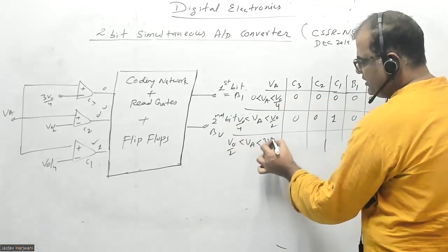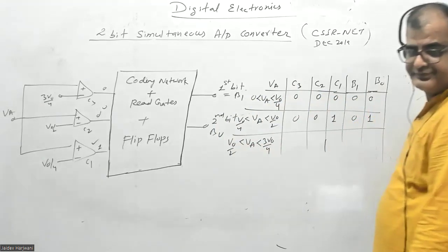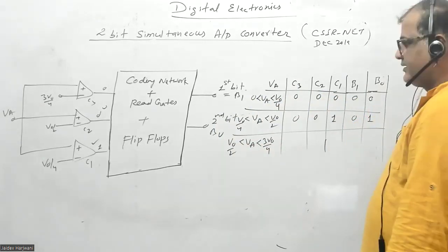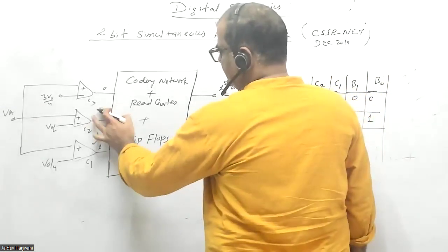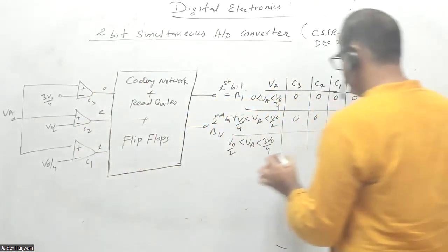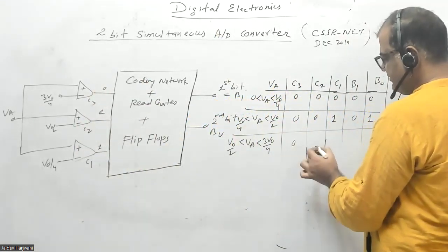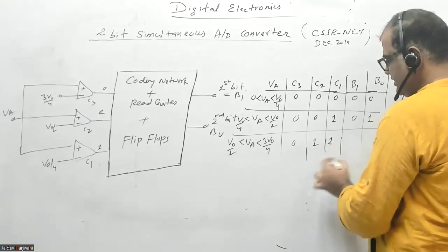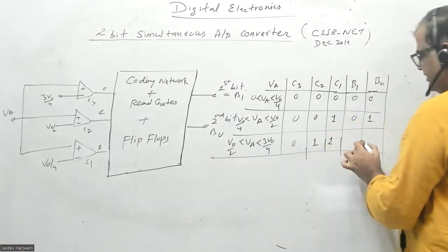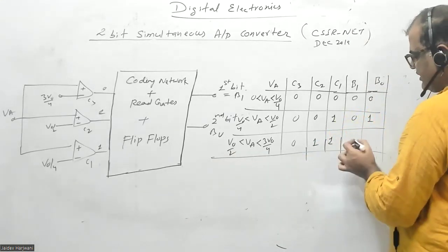This becomes high, this becomes high, but this becomes zero. So C2 and C1 will be 011, and with two ones, I can code this as 10 in binary.